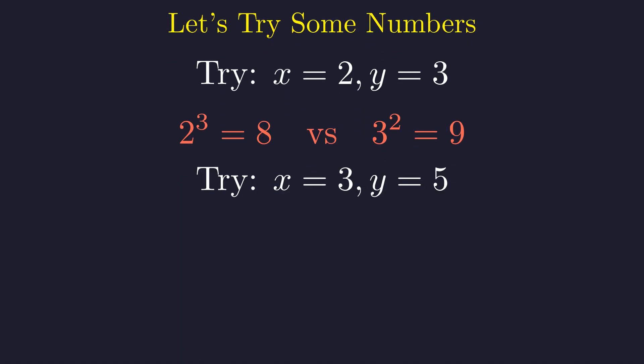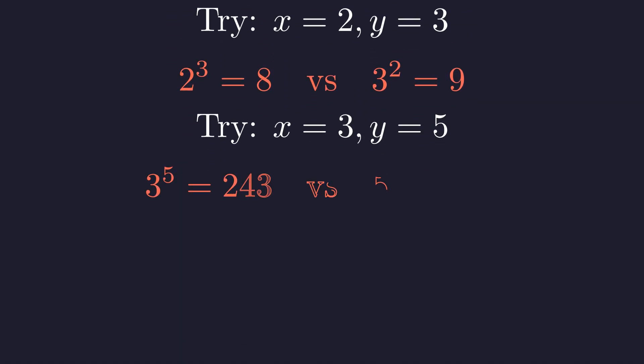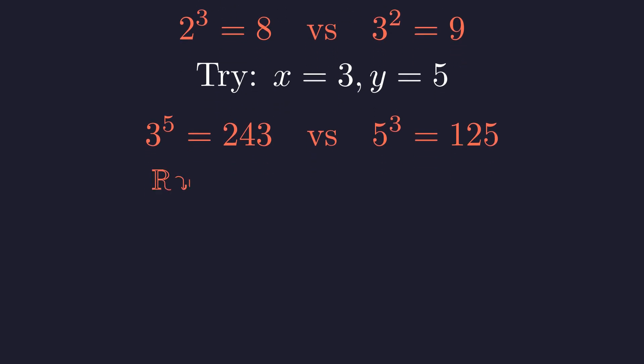What about three and five? Now we've got 243 versus 125. The difference is getting worse as numbers grow. There's no clear pattern by trial and error. The values jump all over the place. Instead of blindly testing numbers, we need a smarter strategy, something that cuts through the chaos.